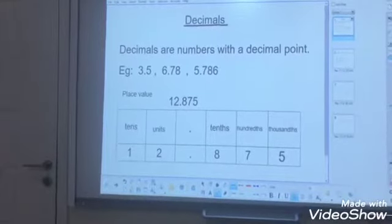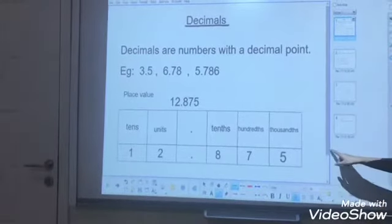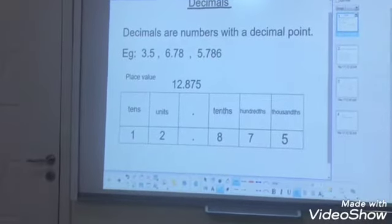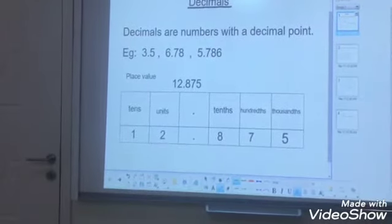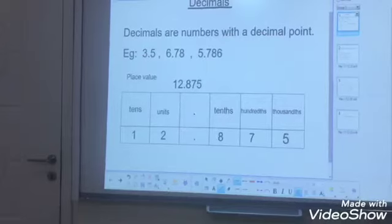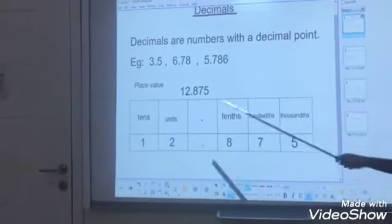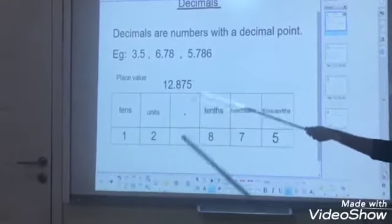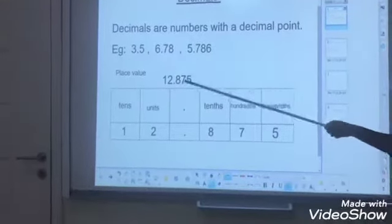Let's have a look at place value. You already learned this, but I'm just reviewing the place values. Here we have a number like 12.875. For the part before the decimal point, as you know, it is a whole number. So it will be units, tens, hundreds, and so on.